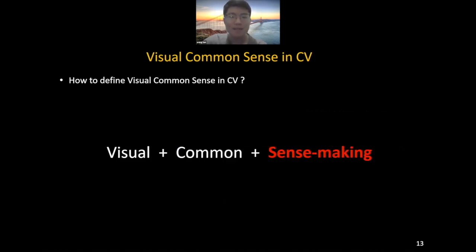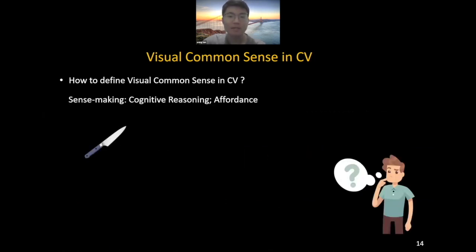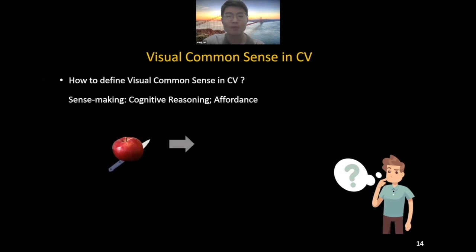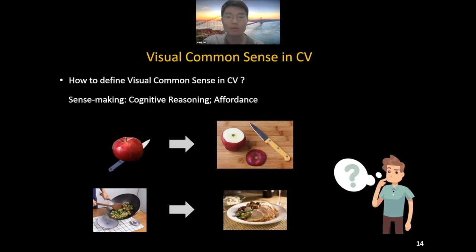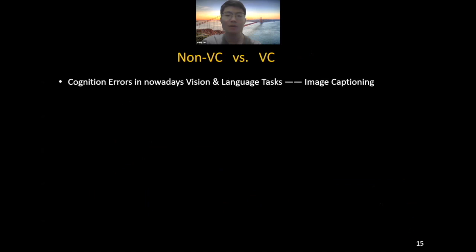By 'sense-making', we mean cognitive reasoning and affordance. For example, a knife cutting an apple to get sliced apple — we will know that the knife can be used for cutting. Since the cook pours the food into the plate, we can sum up that the plate can hold food. However, visual common sense learning, especially sense-making, is still far from resolved.